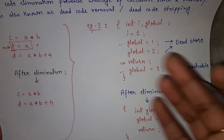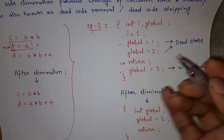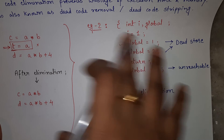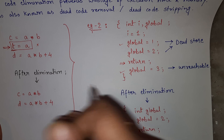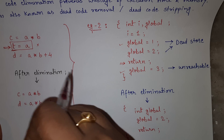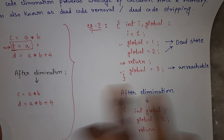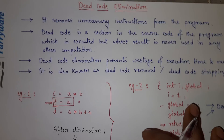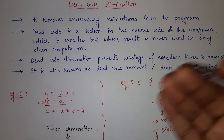Dead code elimination includes removal of unused assignments like T = A. We can remove dead storage and we can remove unreachable code. I have shown three to four different cases in these two examples. If any such case occurs — if there is any type of code present in your program that is of no use, simply taking time and space — you can remove and eliminate it with the help of dead code elimination, and in this way optimize your code in a much more efficient way.